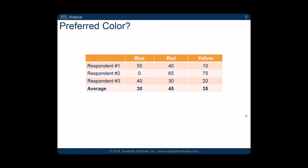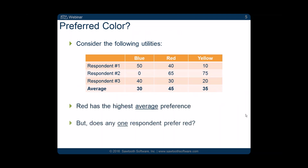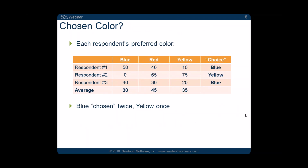Let's look at the fallacy of division. What's the favorite color of this sample of people? You could say red has the highest average utility, so red must be the most popular color. But if we look at how many people actually prefer red, we find that no one does. Respondents one and three preferred blue; respondent two preferred yellow. Even though red has the highest average utility, it gets zero market share from these three people. We're assuming that what applies to the sample as a whole applies to individuals within it — which it doesn't. A simulator built with individual respondent-level data avoids that fallacy.